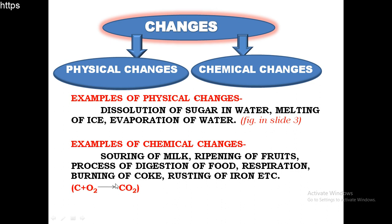Now for chemical changes - for example, burning of coke. Coke is generally represented by carbon. To burn we need oxygen, so it leads to the formation of carbon dioxide. Carbon and oxygen combine with each other and form CO2, which means they give a new substance with different properties to that of carbon and oxygen. These types of changes are called chemical changes, where new substances are formed and the formed substance will have different properties to that of the initial substances.